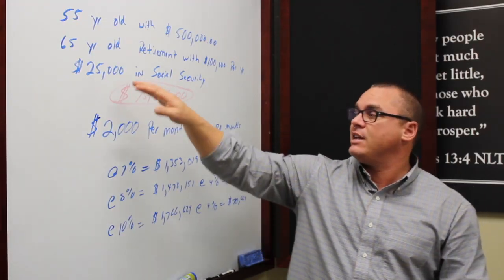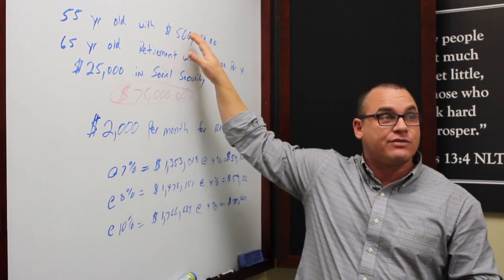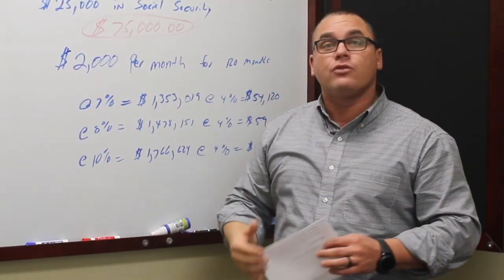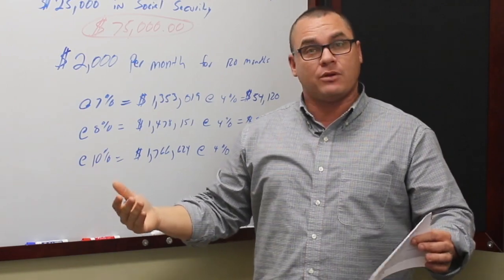Now, let's run a different scenario. Let's say they had a million dollars up here versus 500,000. Man, they could be ultra conservative at that point given all the parameters.